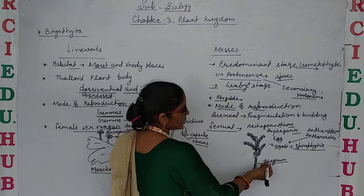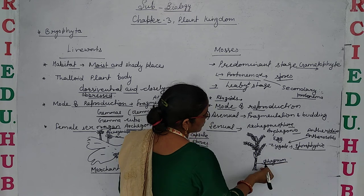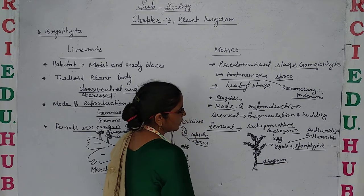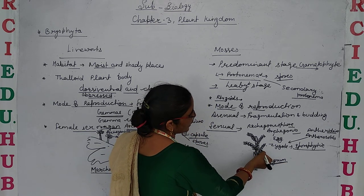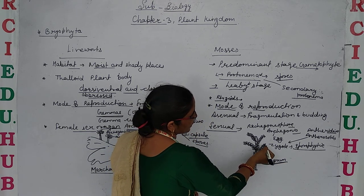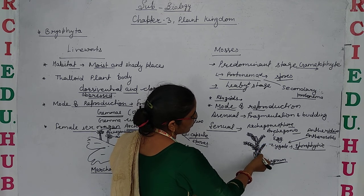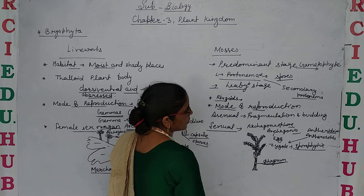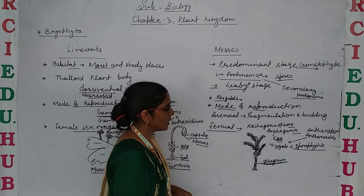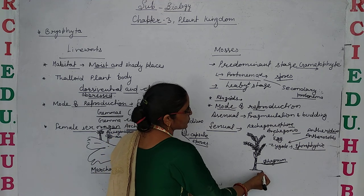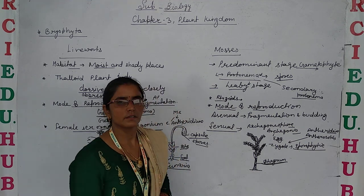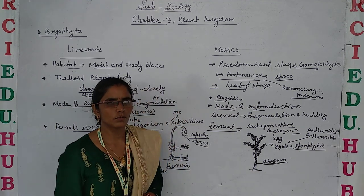Here Sphagnum is visible. It has leaves which are attached at both sides of the main vein. So this is the structure of Sphagnum. Thank you.